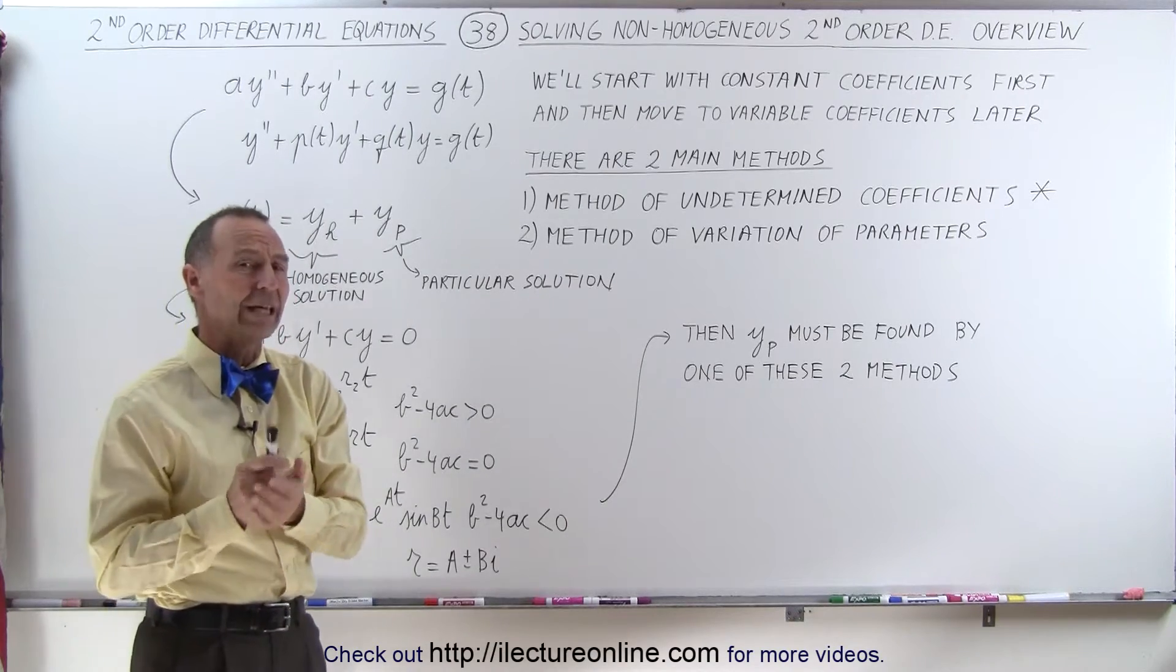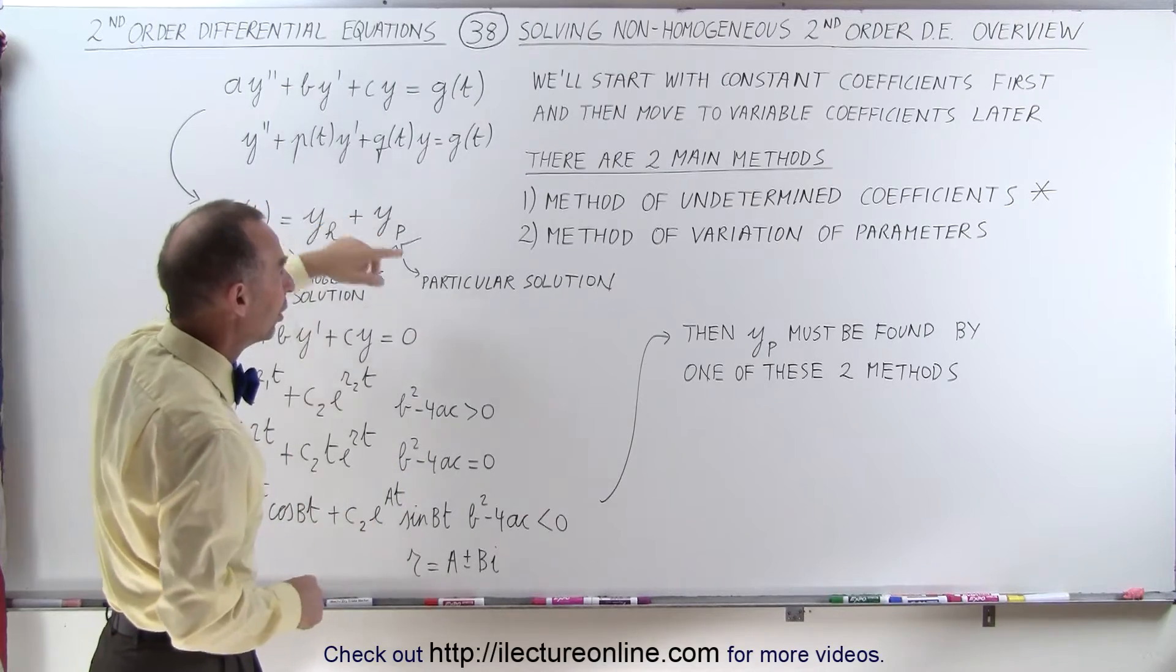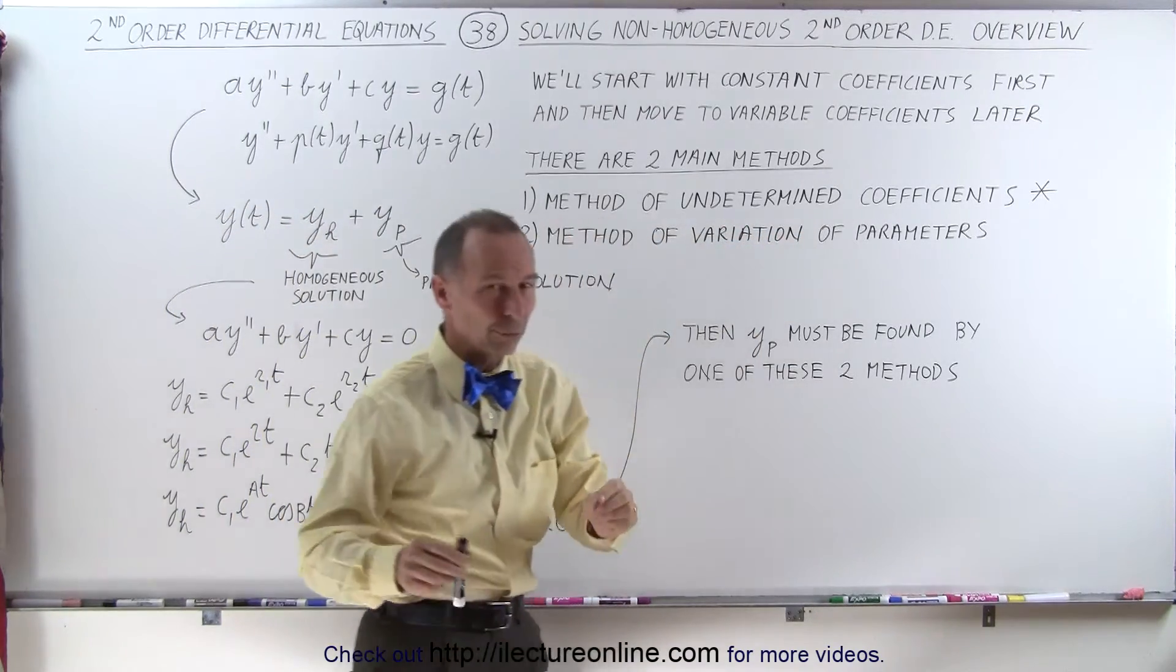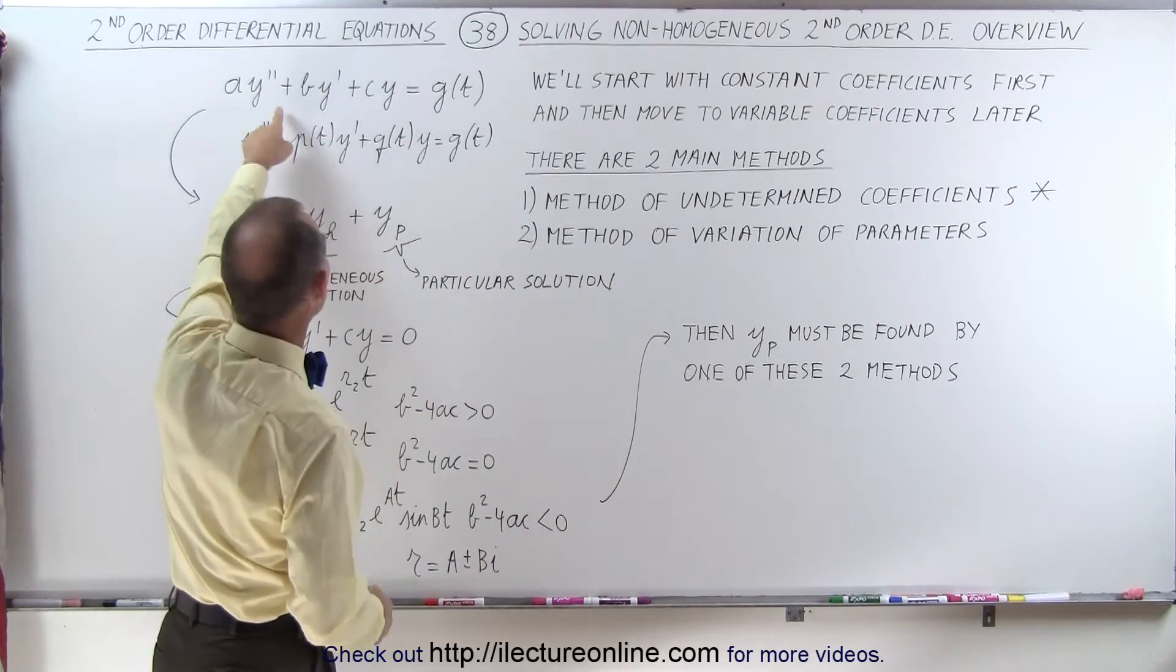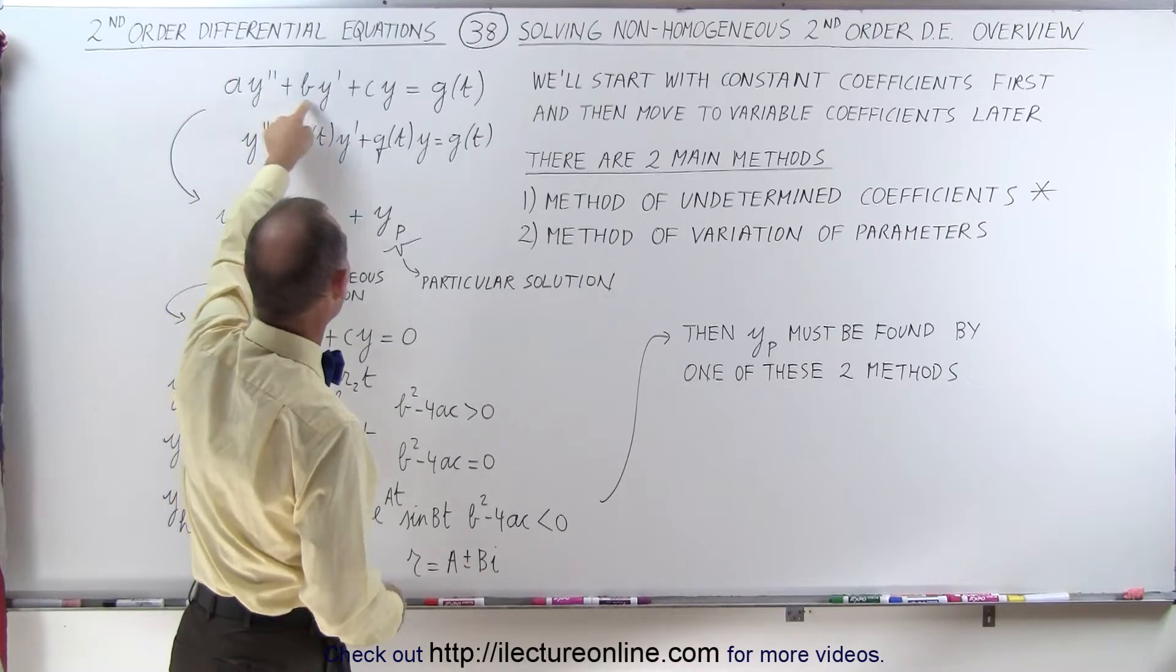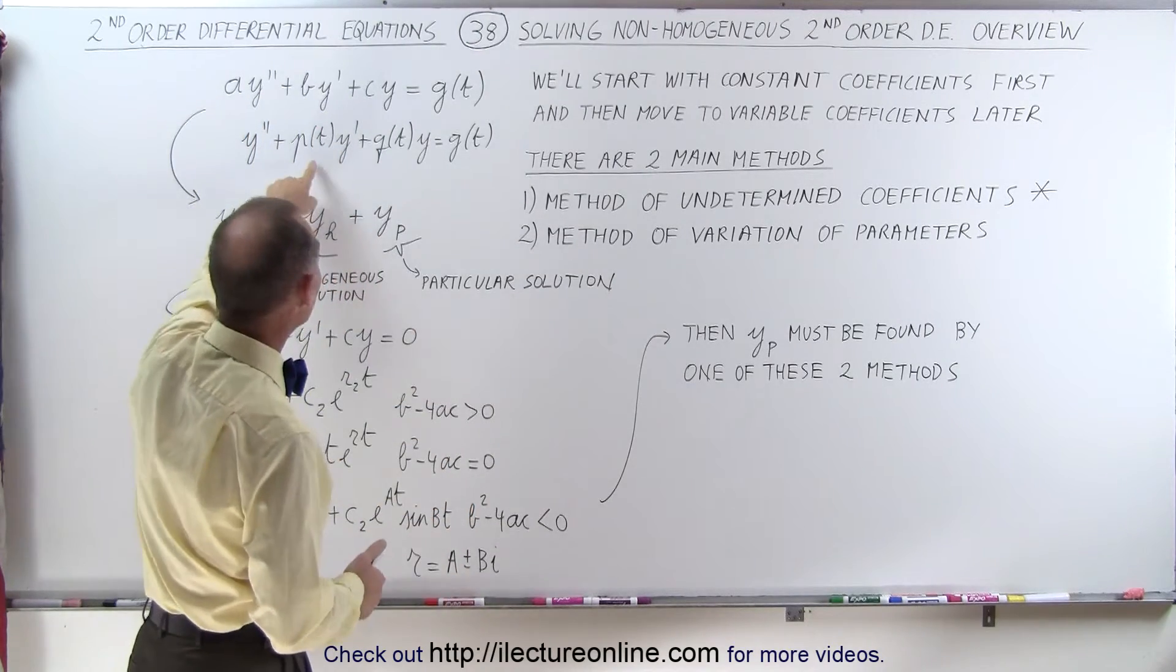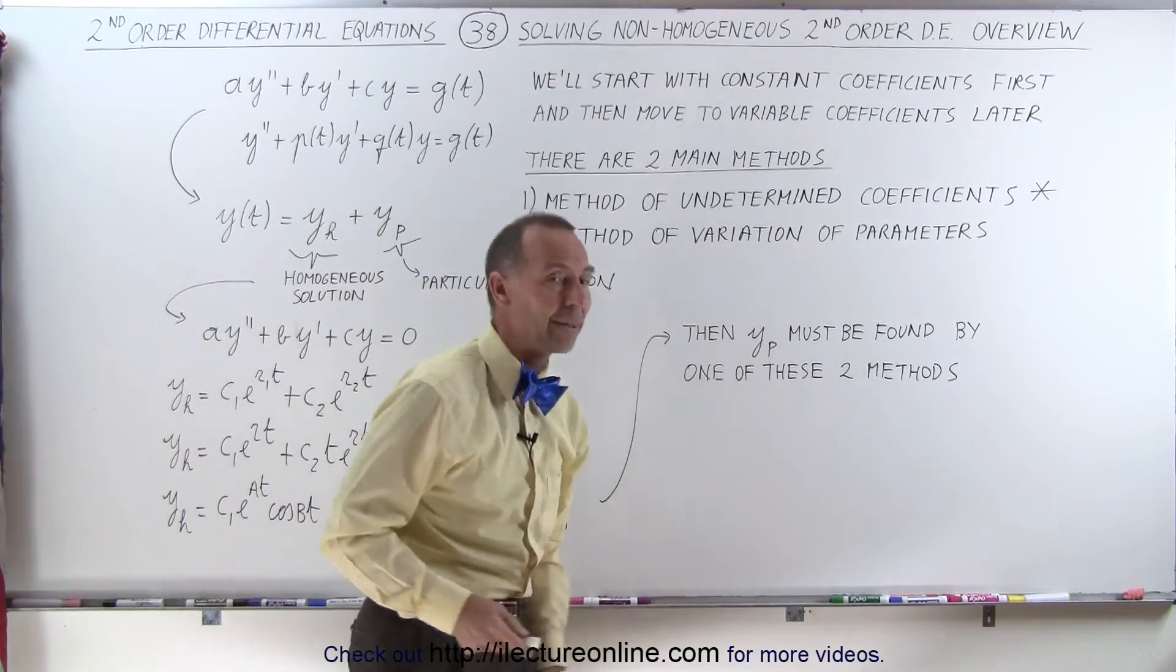There are two main methods in which we can solve these types of equations when they're non-homogeneous. The first method is called the method of undetermined coefficients. We're going to start with that one because that is ideal to work with differential equations that have constant coefficients.